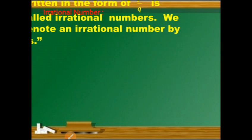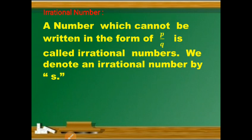An irrational number is a number which cannot be written in the form of P by Q. It is called an irrational number, and we denote an irrational number by S. A rational number can be written in P by Q form, but a number which cannot be written in the form of P by Q is called an irrational number.